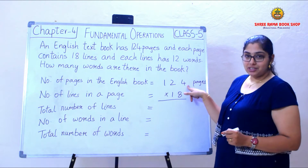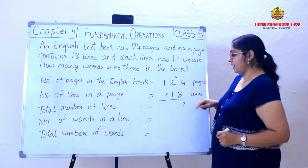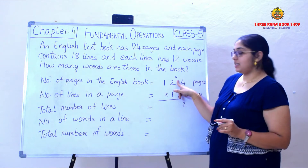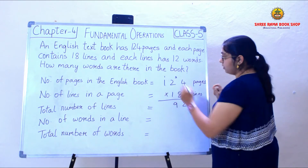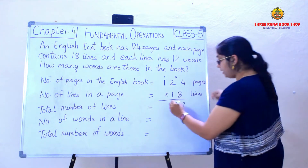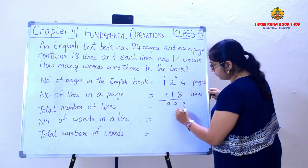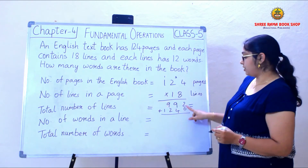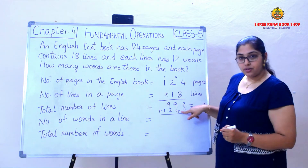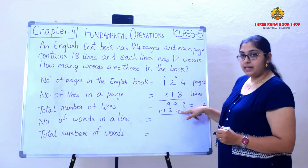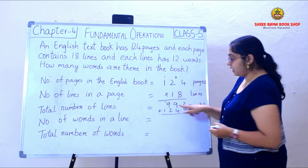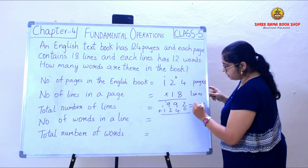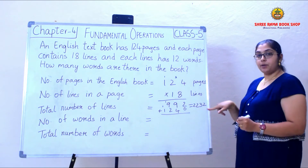8 times 4 is 32, so 2 here and 3 carry. 8 times 2 is 16, plus 3 is 19. Then 8 times 1 is 8, giving 9. Then adding the second row: 0, 4, 2, and 1. When I add both rows, 2 plus 0 is 2, 9 plus 4 is 13, carry 1. 9 plus 2 plus 1 is 12, carry 1. 1 plus 1 is 2. So this is the total number of lines in the book.